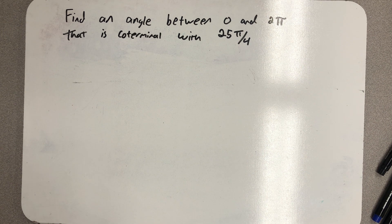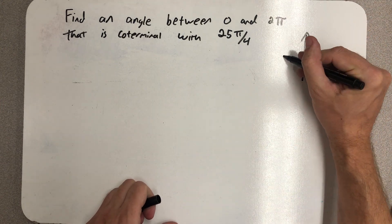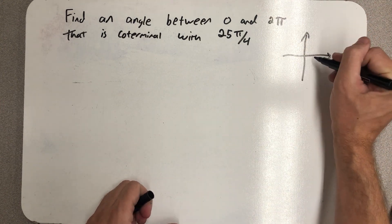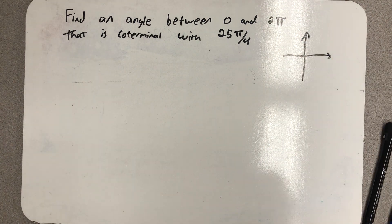Well, to me, what this is really asking us to think about is 25π over 4 is clearly more than one full revolution, right? 2π, 8π fourths, right? In fact, that's more than two full revolutions.